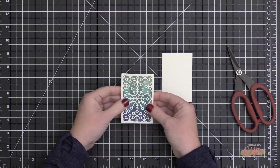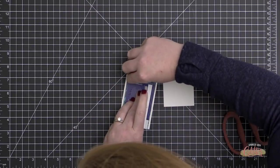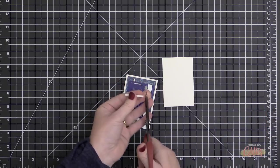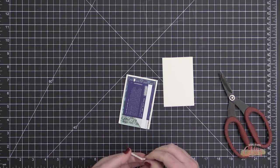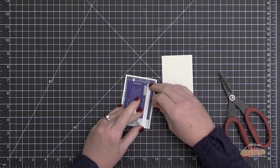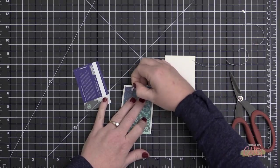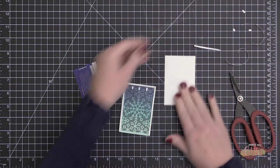So once I have my foam adhesive on there, I decided I needed to create a stopper for this gift card so that it wouldn't go too far down into the pocket. So I'm just adding some extra foam adhesive along the bottom to create a stopper for this gift card.